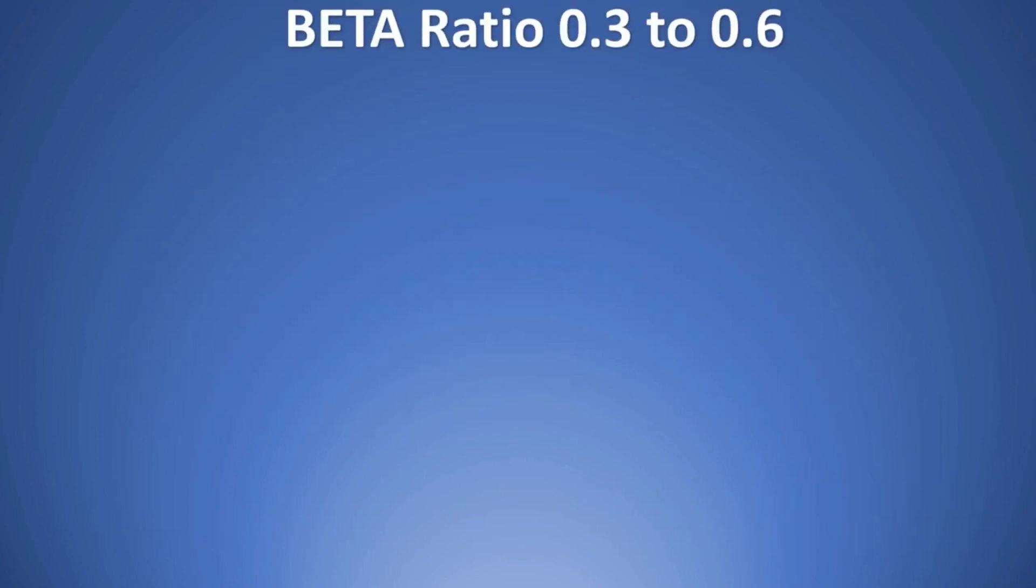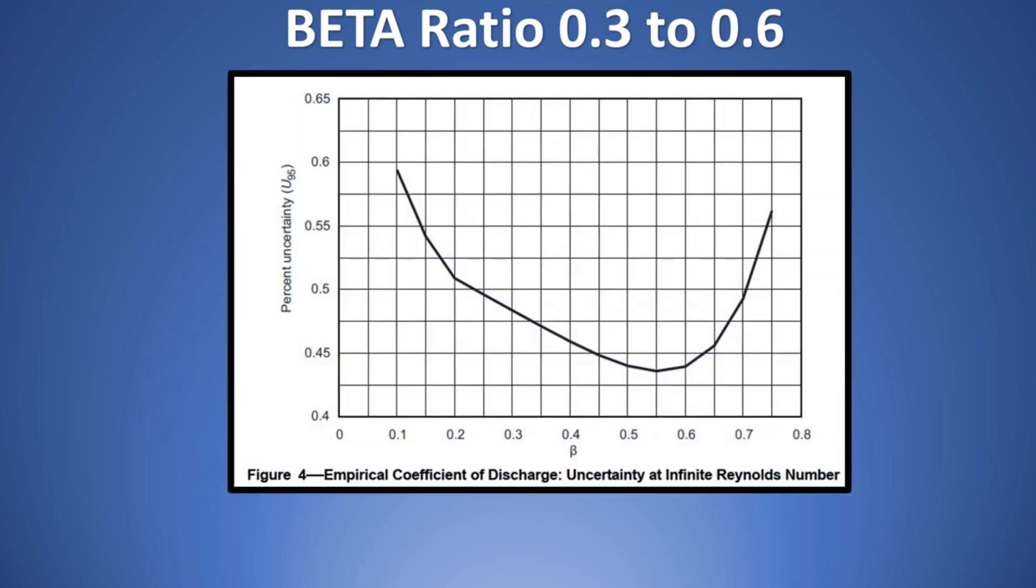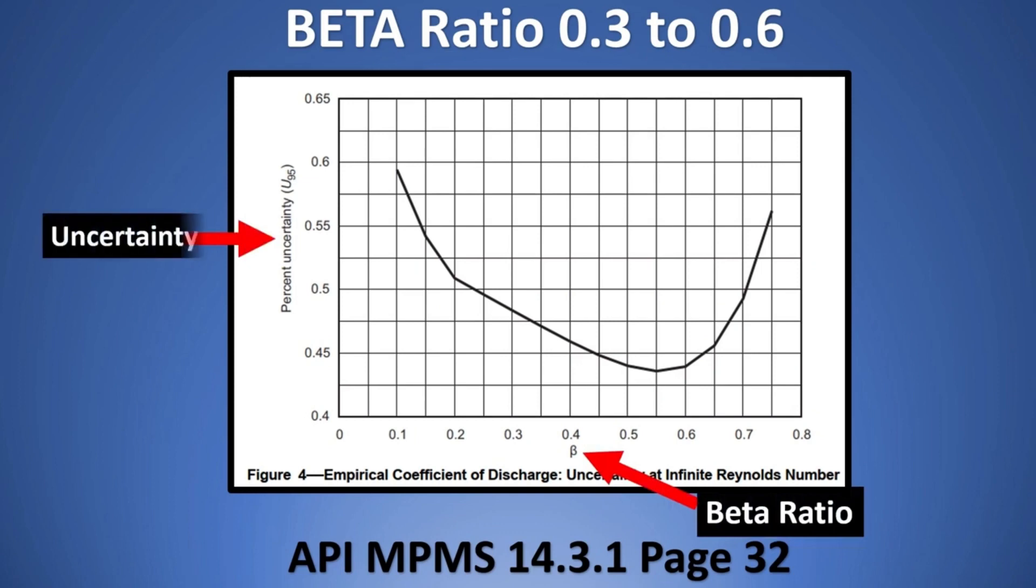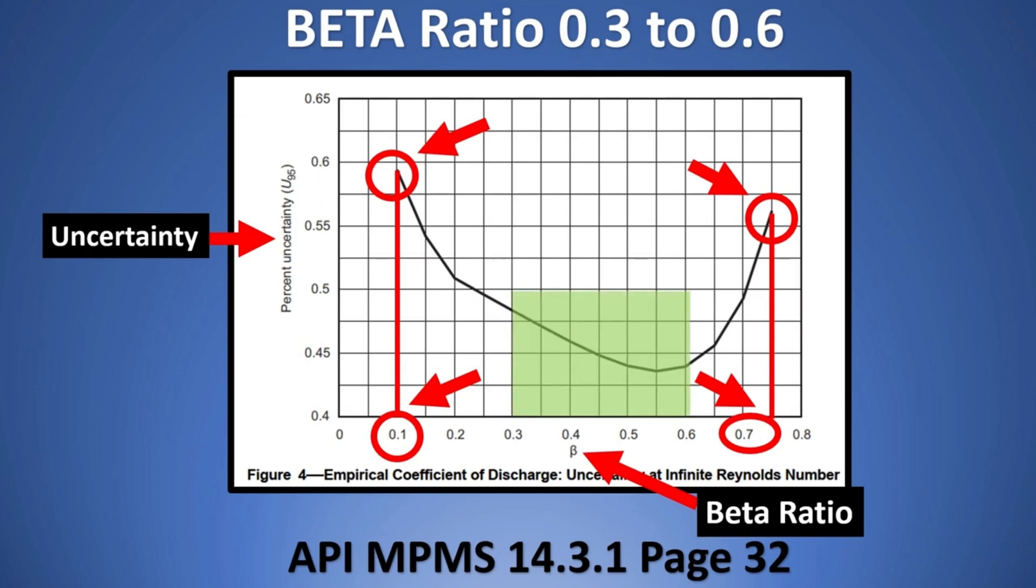But why do I personally love this and I would recommend you to read this standard is because if you see here, for example, I have made a video saying that when is the beta ratio between 0.3 to 0.6, etc. If you see here in this chart, this chart is taken from API MPMS standard. The x-axis you will have is beta ratio and on the y-axis you are going to have the percentage uncertainty. Now if you see at very extreme ends which is 0.1 or 0.7 of beta ratio, if you see the uncertainty, it is too high. If you see here, if you keep the beta ratio as 0.1, the uncertainty could go up till 0.60%. But if you see in the middle range between 0.3 to 0.6, here the uncertainty is far less. If you see the graph is going down. We usually, that is why I recommend to keep the beta ratio between a middle range. Such insightful information is available in these API MPMS standards.